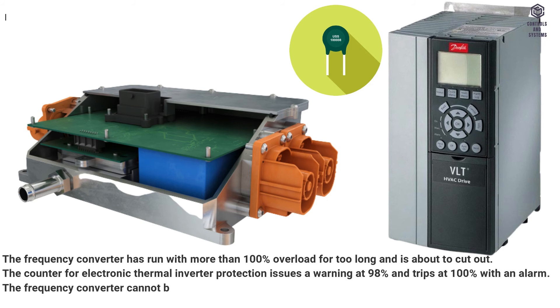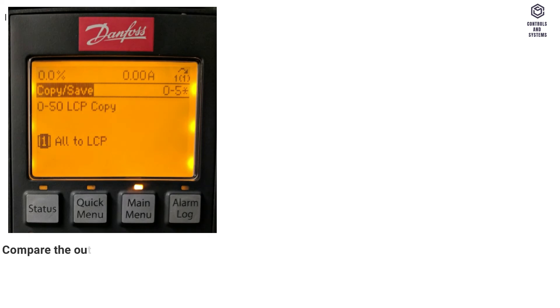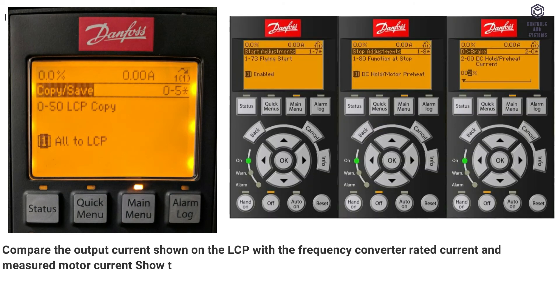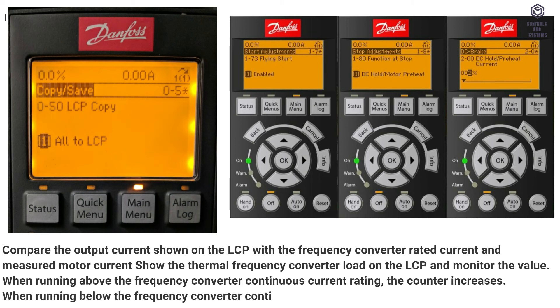The frequency converter cannot be reset until the counter is below 90%. Troubleshooting methods: Compare the output current shown on the LCP with the frequency converter rated current and measured motor current. Show the thermal frequency converter load on the LCP and monitor the value. When running above the frequency converter continuous current rating, the counter increases. When running below the frequency converter continuous current rating, the counter decreases.